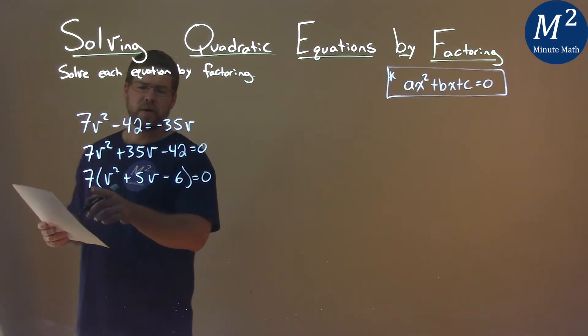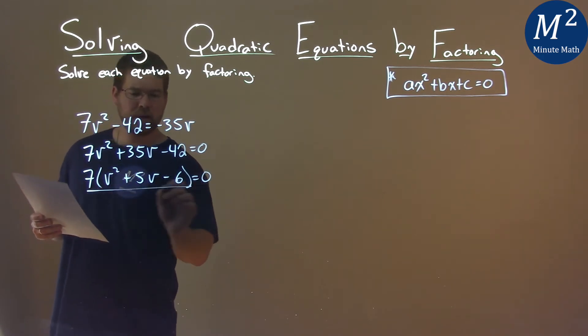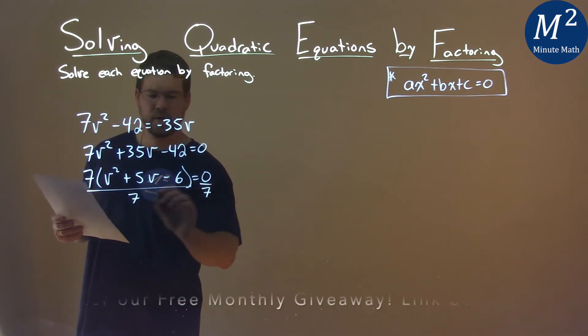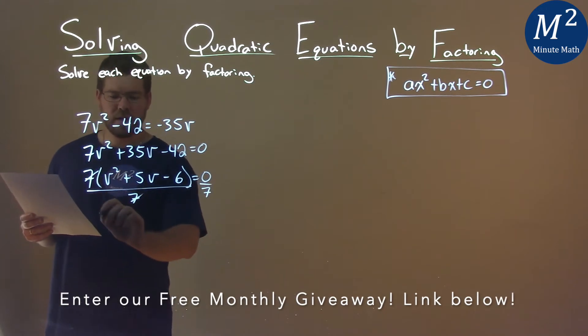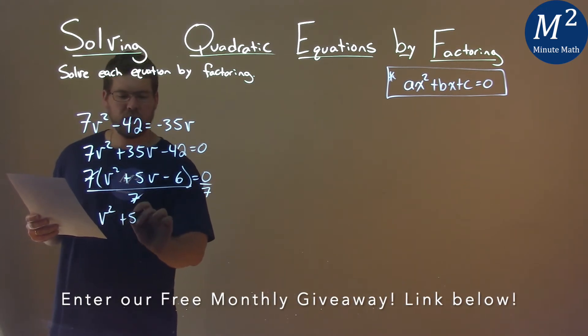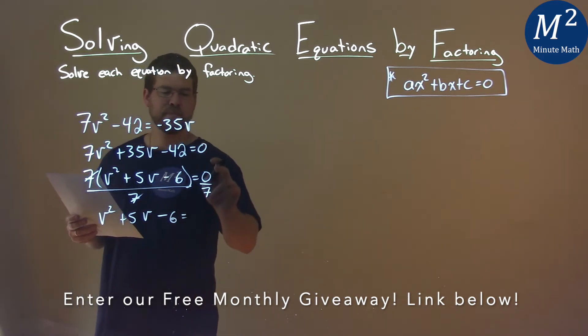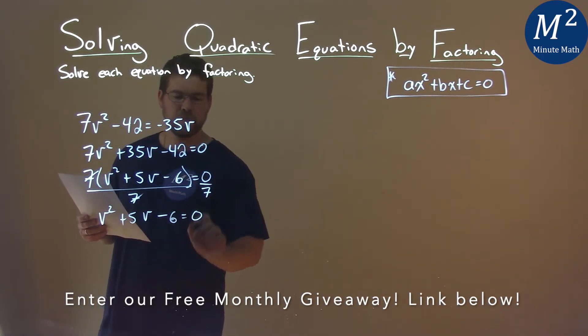Now we're multiplying this whole thing by 7, so if I divide by 7 on both sides, I'm going to eliminate that. We have v² + 5v - 6 = 0, and 0 divided by 7 is 0.